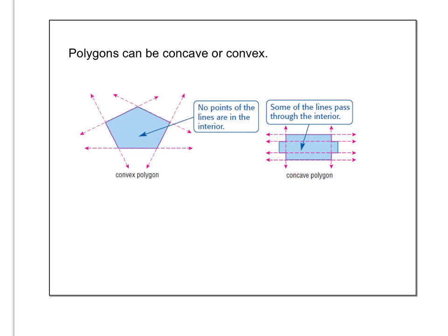Some more vocabulary that you have to be familiar with when you're dealing with polygons is these two words: concave and convex. So polygons can be one or the other and you see two examples here. Again you might want to pause the video and put this stuff into your notes.